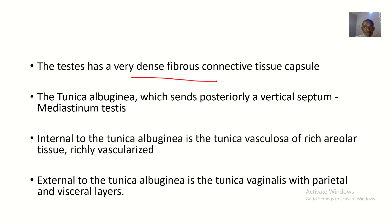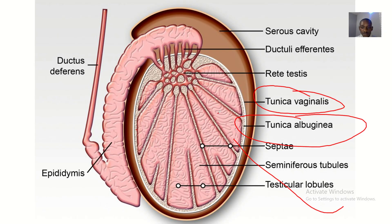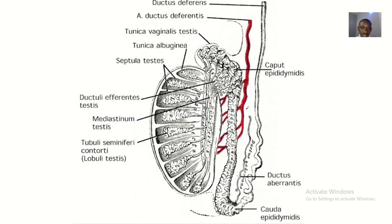The tunica albuginea sends posteriorly a vertical septum called the mediastinum testis. This septum here is sent from the tunica albuginea posteriorly into the testes.